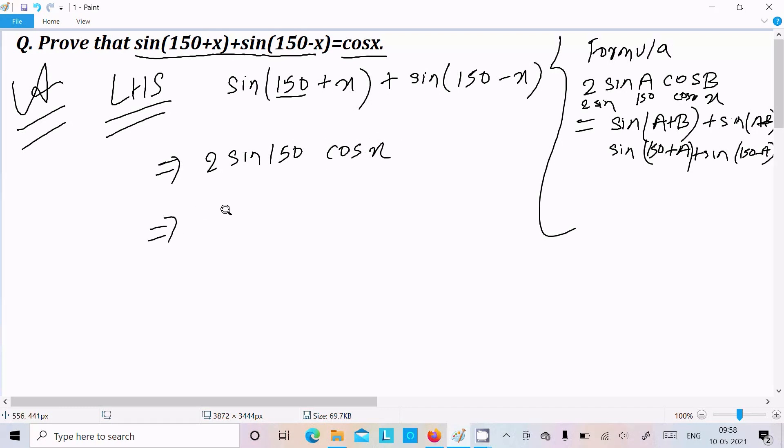Now thereafter we don't exactly know about the value of sin150. So we can use another formula: sin(180-θ) = sinθ, or you can use sin(90+60).